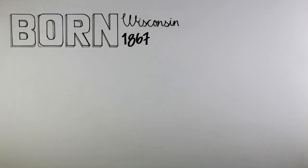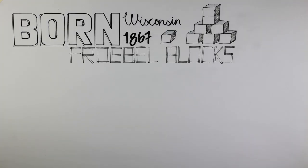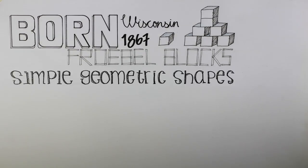Frank Lloyd Wright, one of America's most renowned architects, was born in Richland Center, Wisconsin in 1867. Wright had an early exposure to architecture. At 9 years old, he played with four-wheel blocks gifted to him from his mother, which allowed him to experiment with multiple combinations of geometrically shaped blocks. When he was 11, he worked on a family farm and noticed repeating simple geometric shapes appearing in nature.